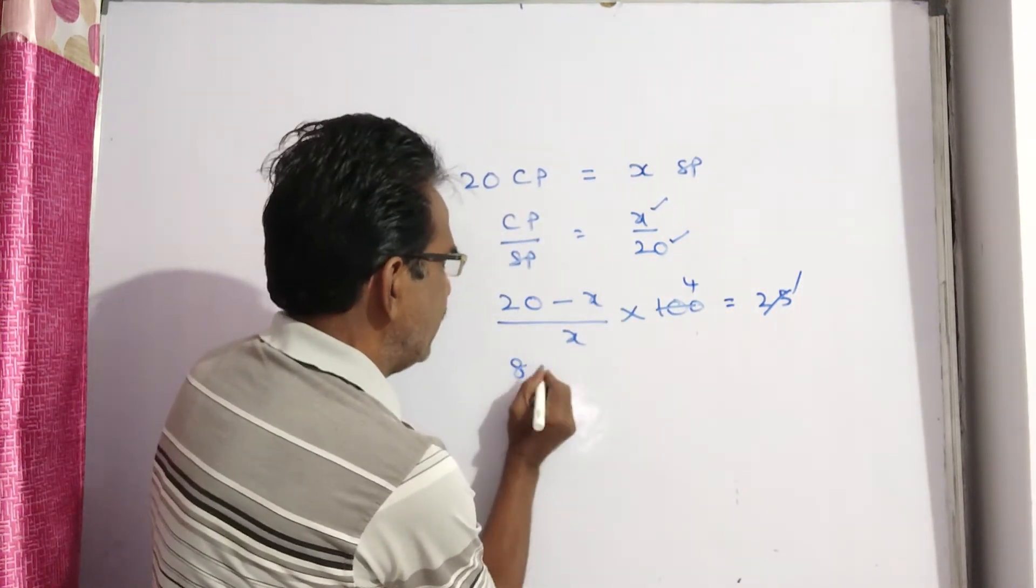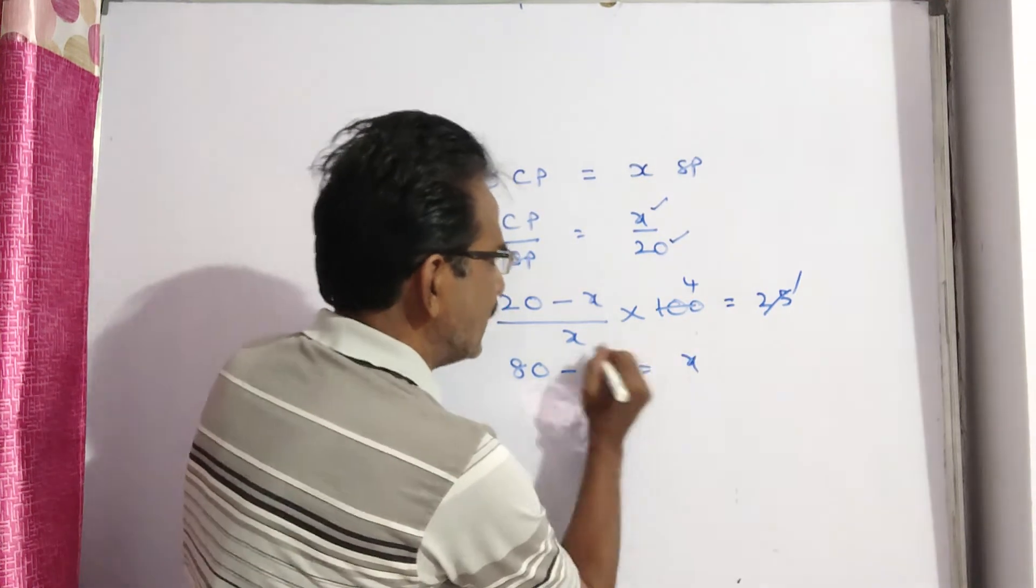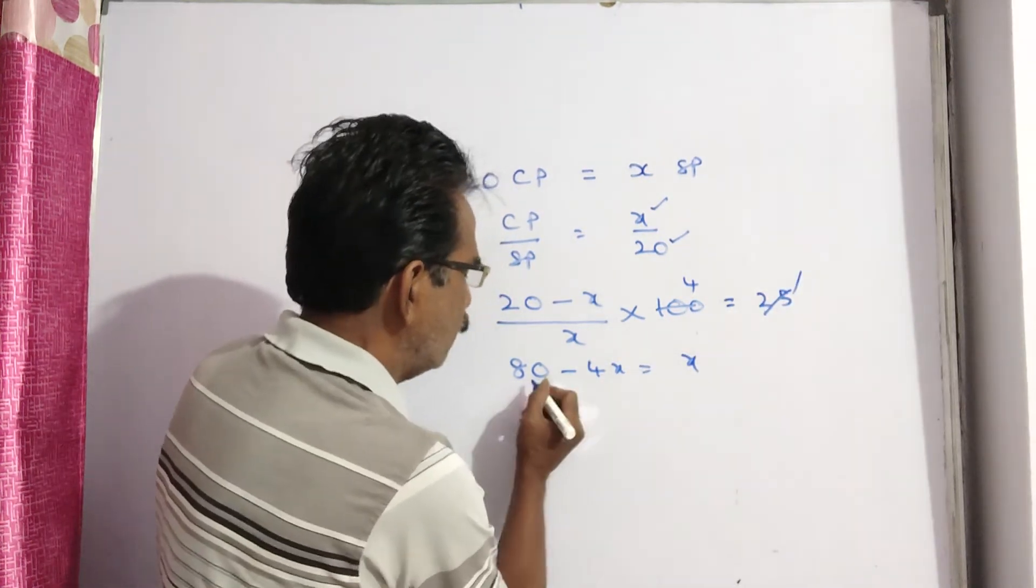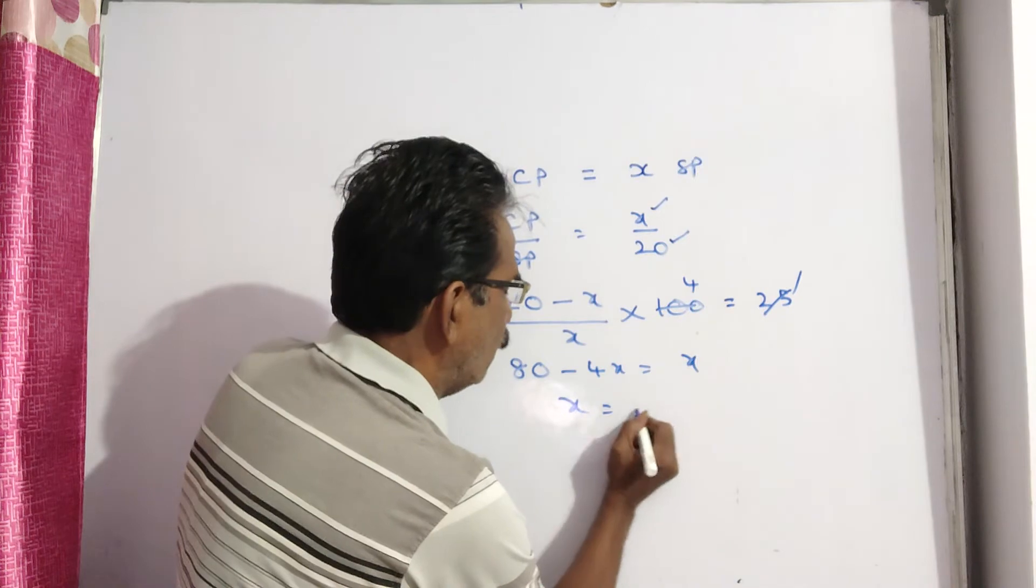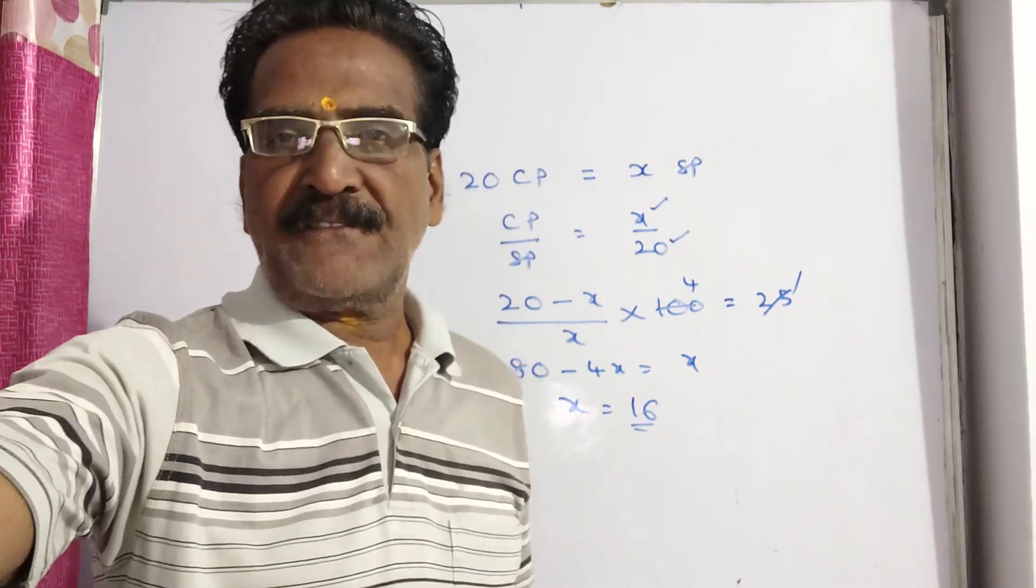4 into 20 minus X: 80 minus 4X is equal to X. 5X is equal to 80. X is equal to 16. This is your answer, friends. Thank you.